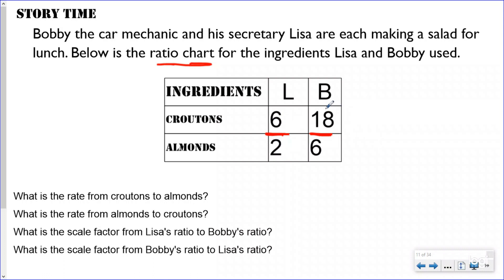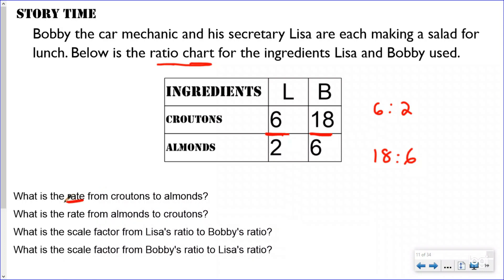Lisa really likes croutons — she has six croutons to every two almonds. Bobby's a little bigger and needs more food, so he has 18 croutons. Bobby's ratio for croutons to almonds is 18 to six. So we have six to two for Lisa, and 18 to six for Bobby. Our first question: what is the rate from croutons to almonds?